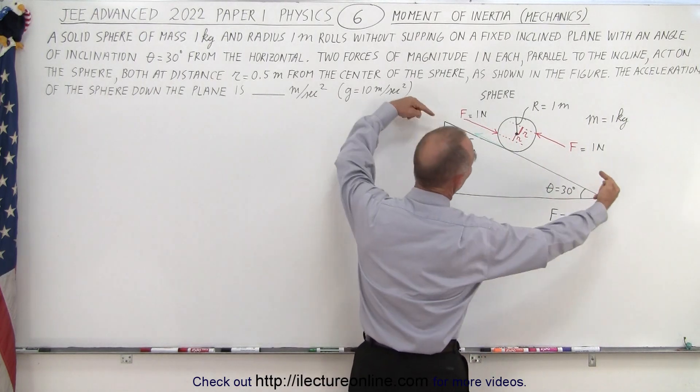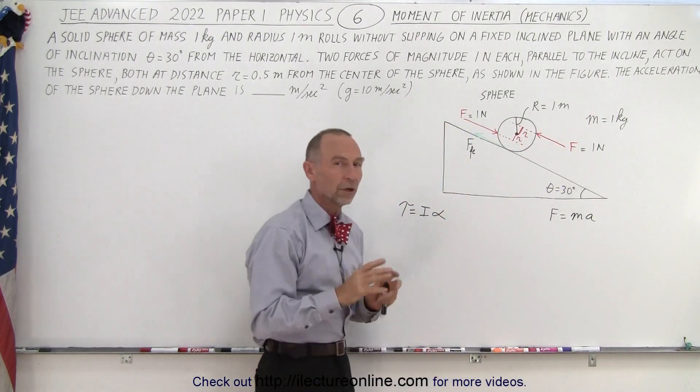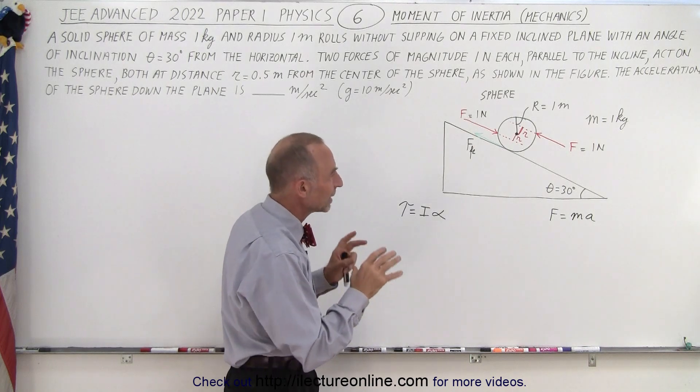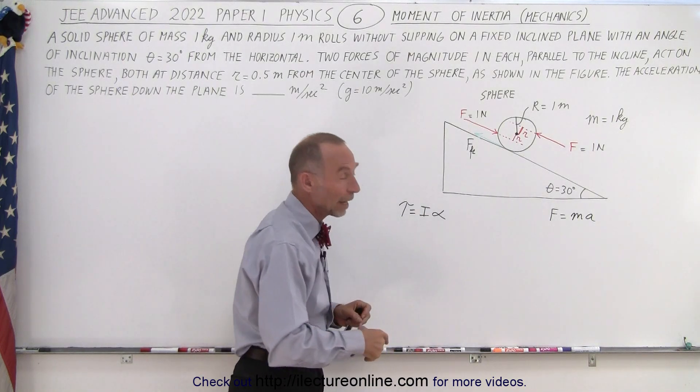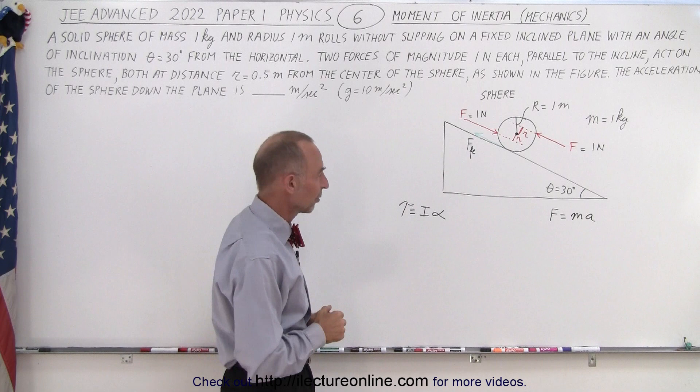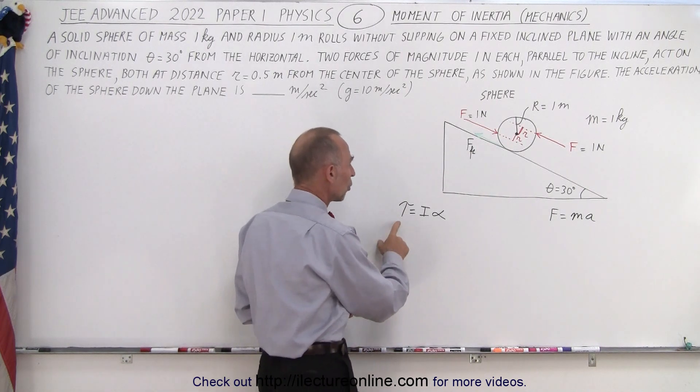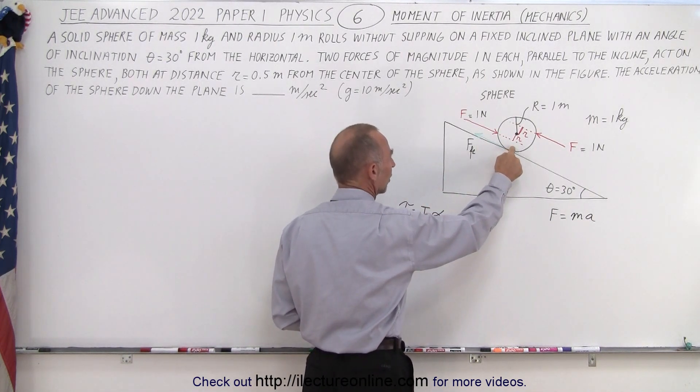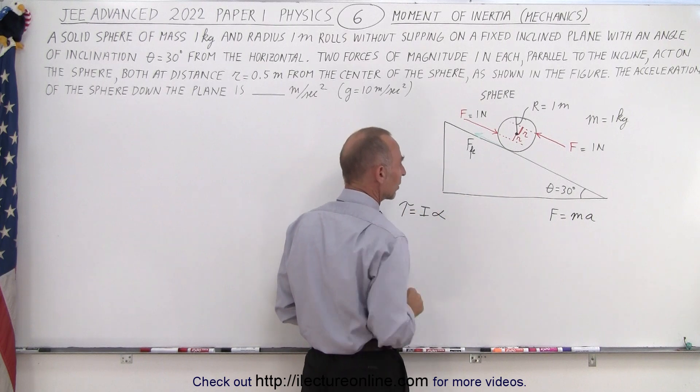And then we have these two forces, which actually give it a counter torque, holding it up somewhat. Probably not enough to keep the ball from rolling down, but to slow it down somewhat. So, that is the torque equals the moment of inertia of the solid sphere times the angular acceleration.